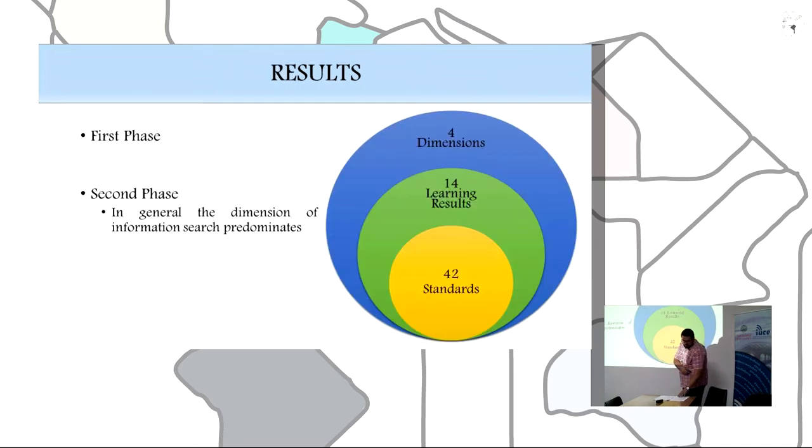At the end of the first phase, we create a table of specification with four dimensions: search, evaluation, process and communicate information. We remove the dimension of information need because we consider it as a constant dimension during the whole process.